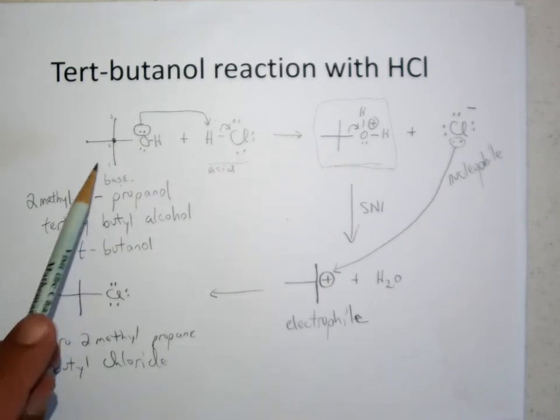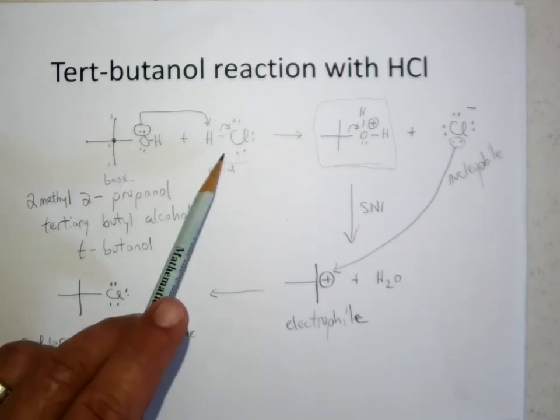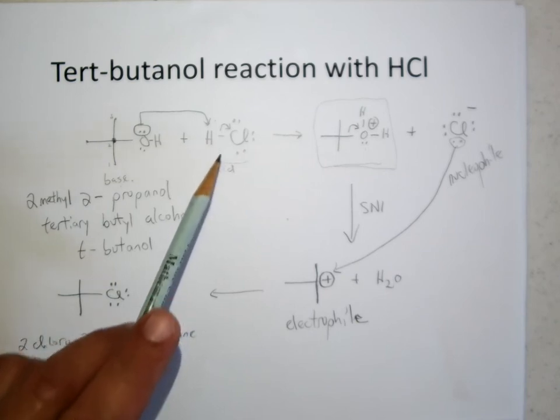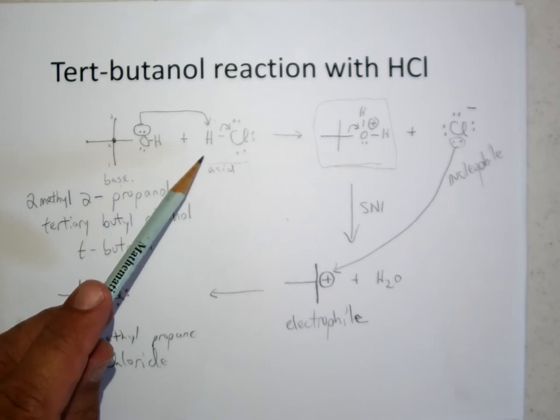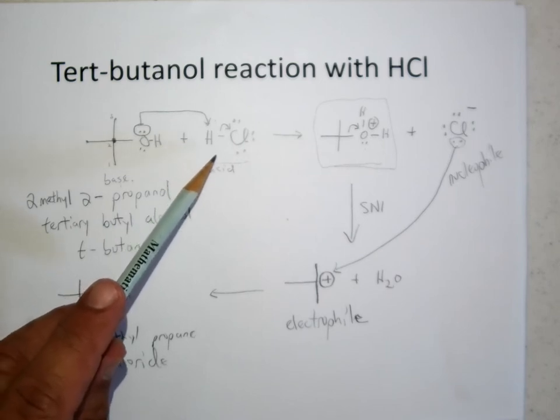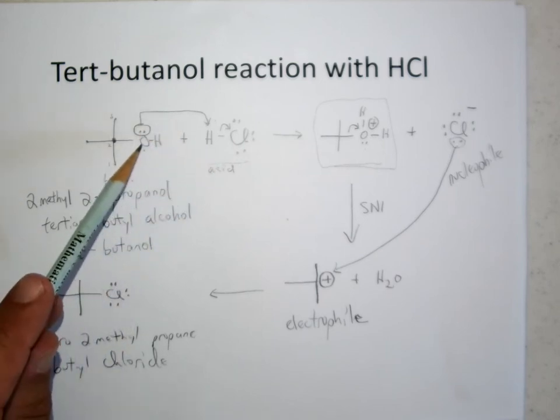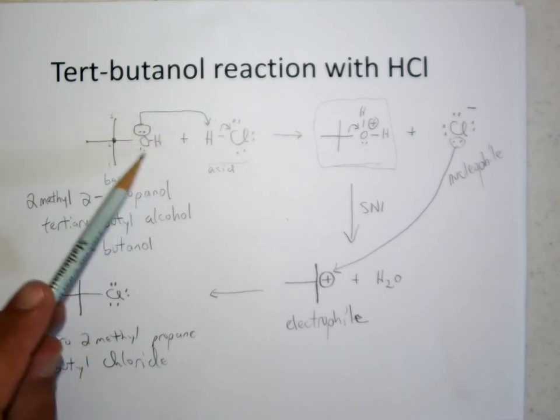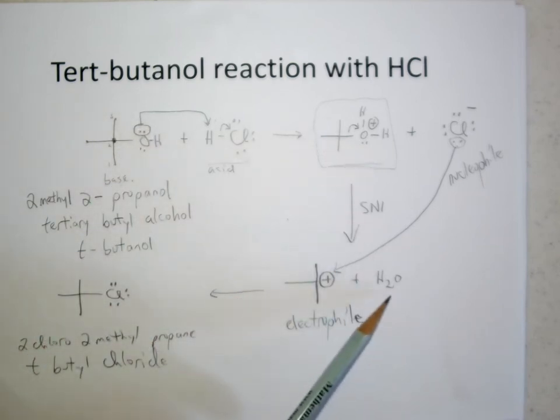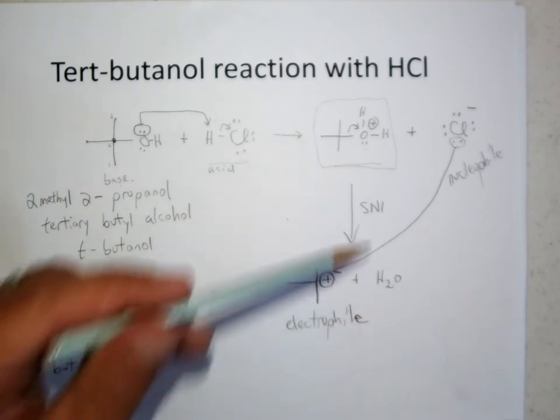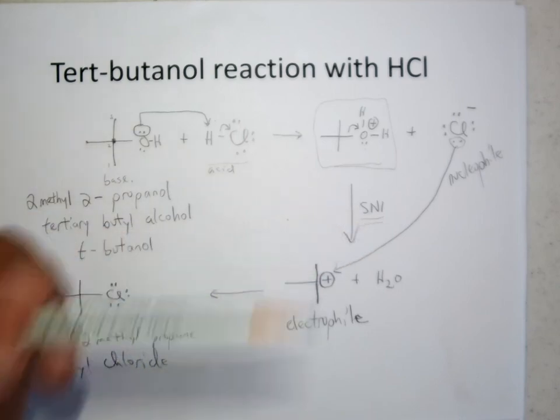So this reaction, tert-butanol with hydrochloric acid is a catalyzed SN1 reaction, where first we have to throw in the hydrochloric acid to protonate, and then once we have this protonated, then the water can leave. Once the water is left, then we have our carbocation intermediate, like we would have with other SN1 reactions.